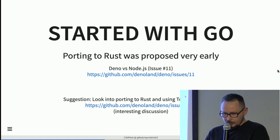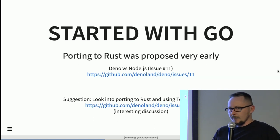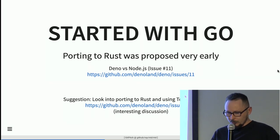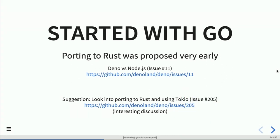It all started with Go. The idea was to use Go as the implementation language, but porting to Rust was proposed very early. There are very interesting discussions to read in the GitHub issues. It's also interesting to read all the issues at the early stages of development because a lot of design decisions were discussed there, and it's nice to know the context.